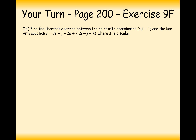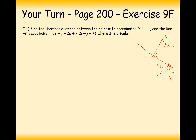Now your turn — have a go at this question: find the shortest distance between the point (4, 1, minus 1) and this line. Pause the video and try this one out. So, first thing's first: draw a diagram. We have point A here, and the point on the line that will make a right angle. Point A is (4, 1, minus 1), and the vector equation of the line is (3, minus 1, 2) plus lambda times (2, minus 1, minus 1).